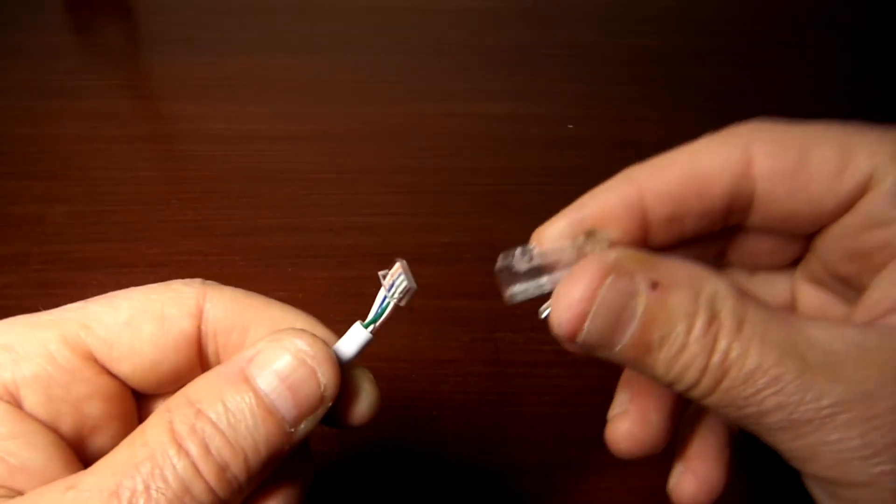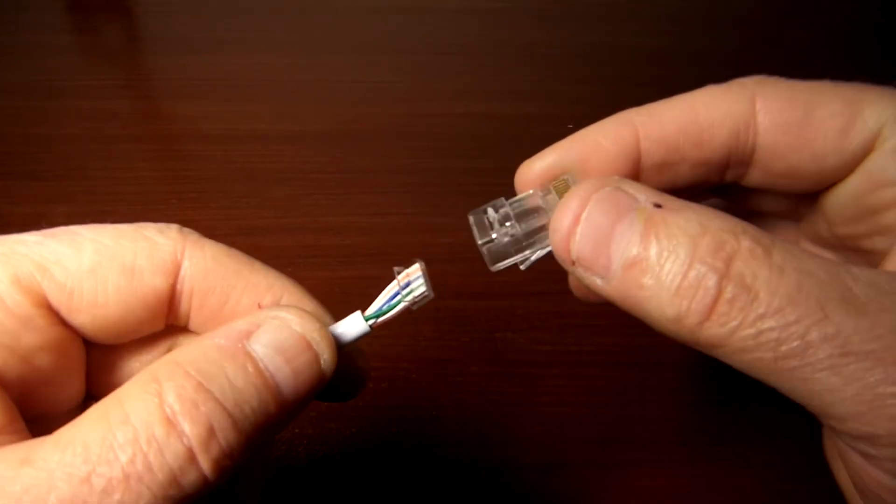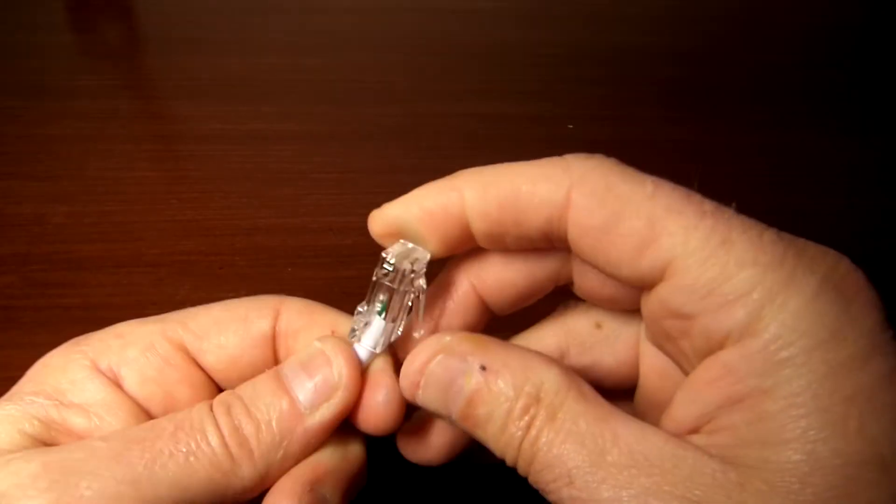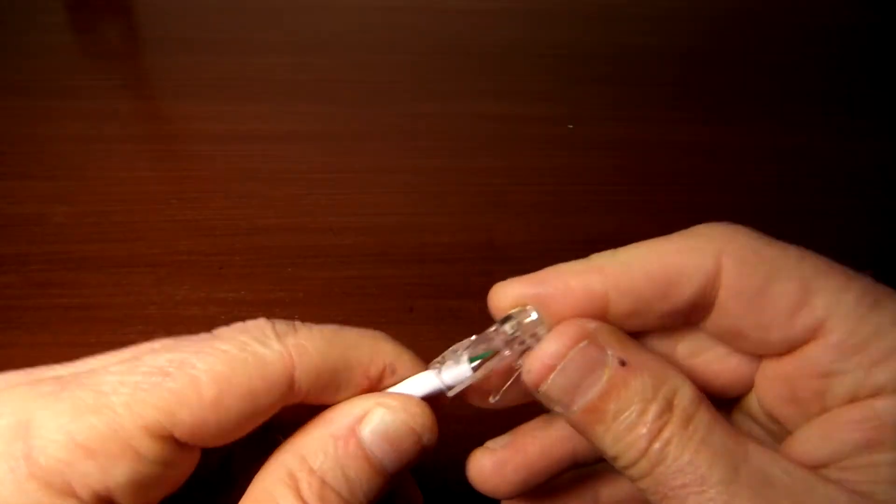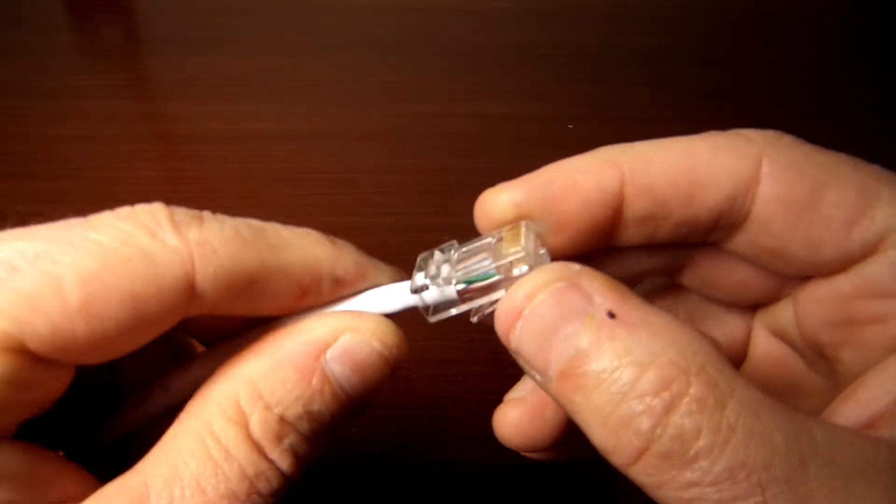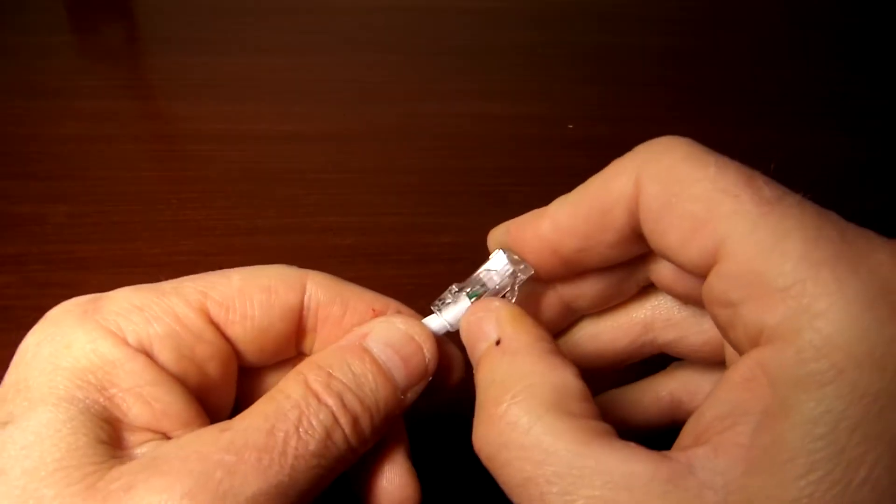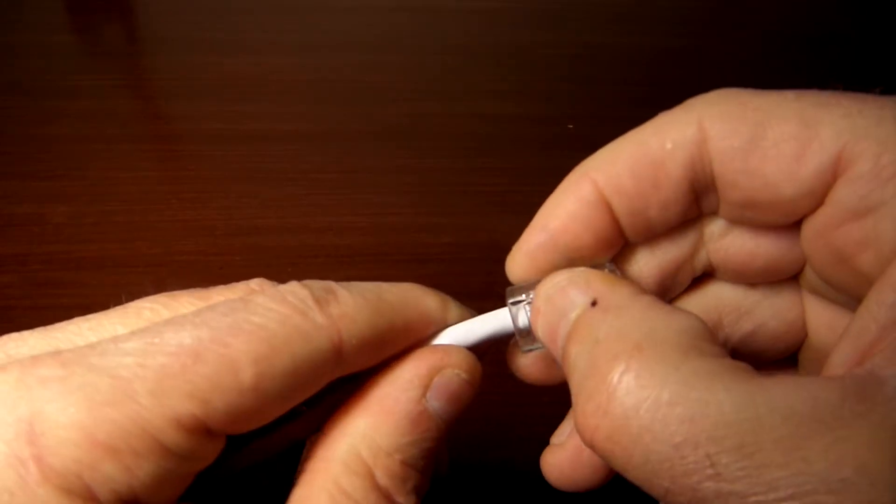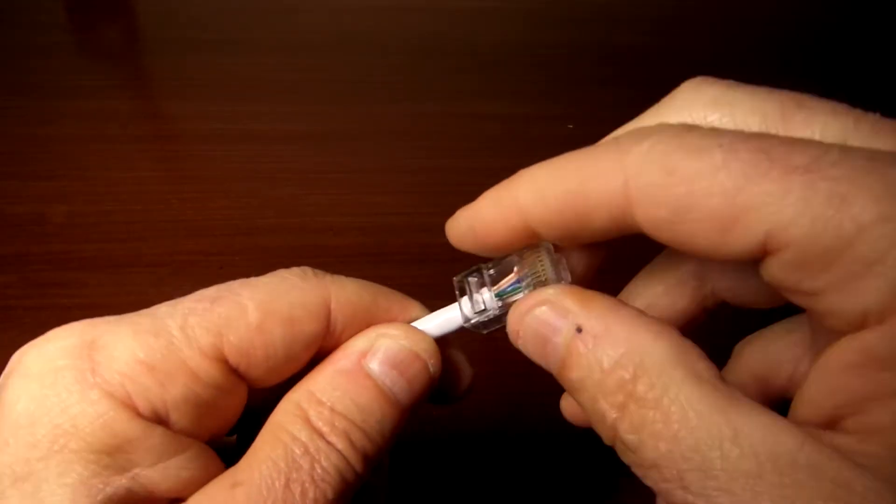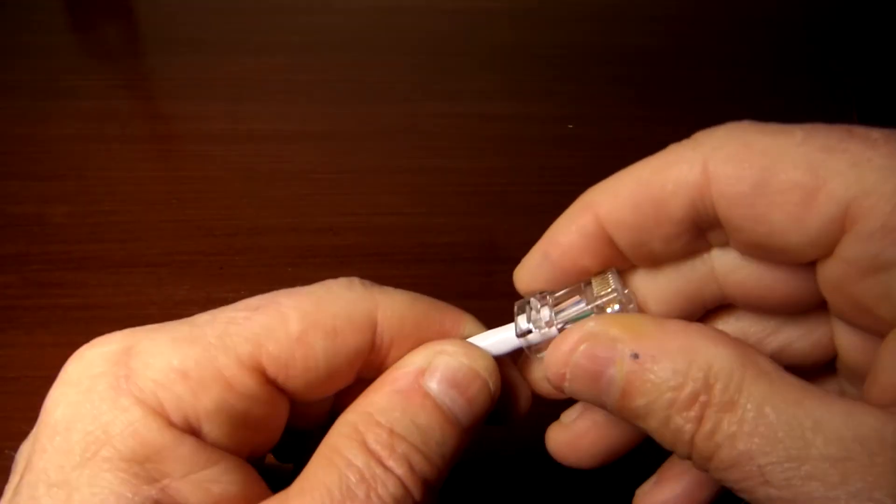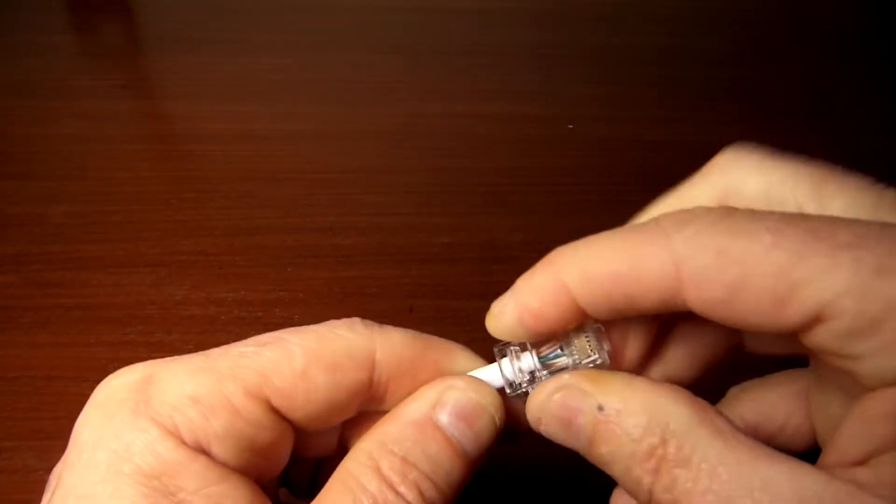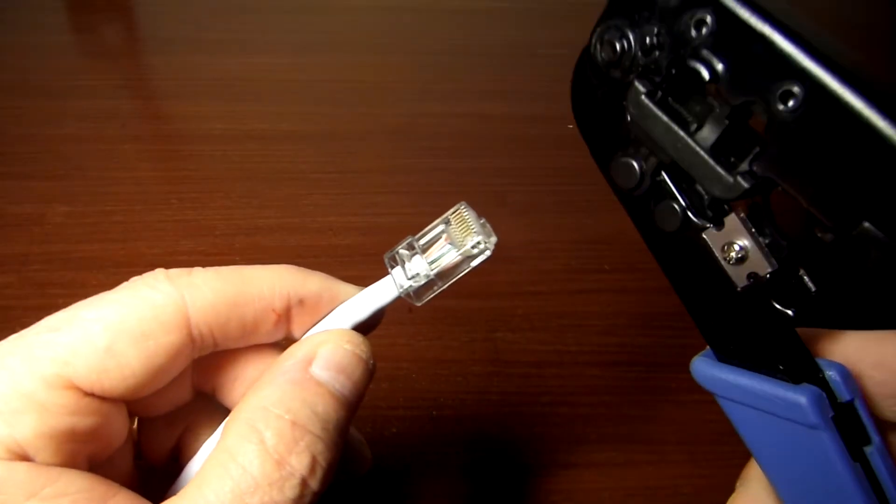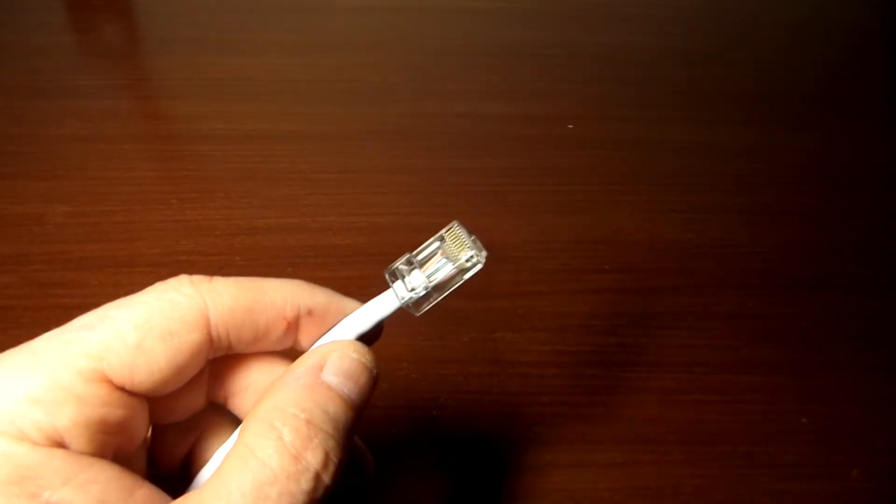You want to insert this flush into the end and make sure that you have enough wire jacket that whenever you put it in the crimping tool, it's going to have enough in there to secure the wire in place. So with all that in mind, you want to find the Cat5 port.